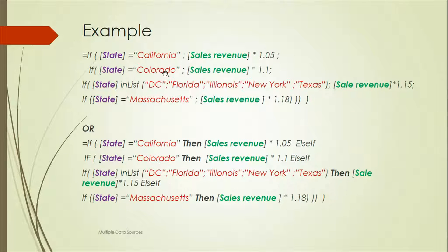If the state is Colorado, then it will multiply by 1.1 to the sales revenue. If the state is in a list of other states, then the sales revenue will be multiplied by 1.15. And if the state equals another value, then it will multiply sales revenue by 1.18.